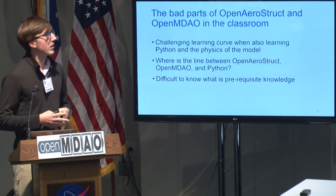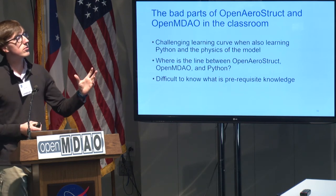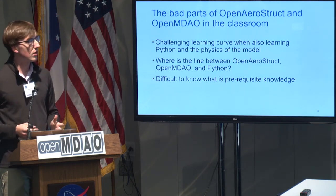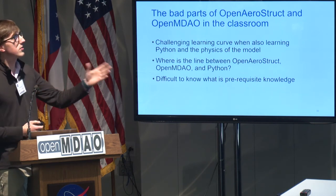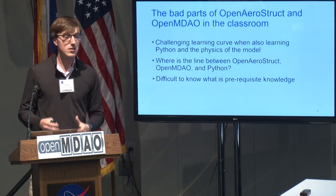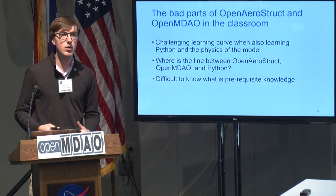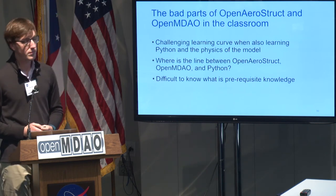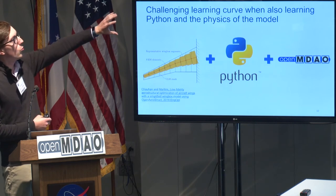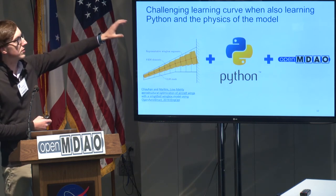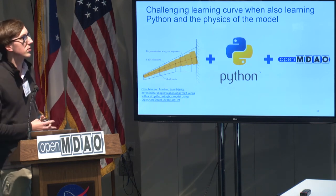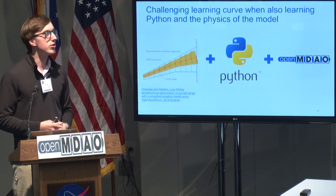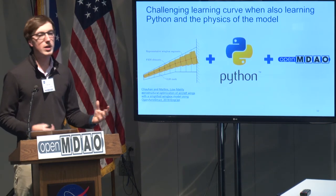Another common question was: where does OpenAerostruct start? Where does OpenMDO stop? What is Python? Is this a NumPy method or an OpenMDO method? And it's difficult to know what is prerequisite knowledge. Do I need to know the ins and outs of aerostructural wing design to get meaningful results? Or is the tool robust enough to catch numerical errors so students aren't getting CLs of 4.6 and thinking that's okay? If you're a student taking four classes and maybe facing PhD quals, it's challenging to find time to learn all of this.